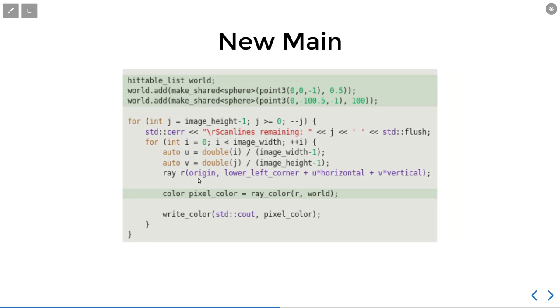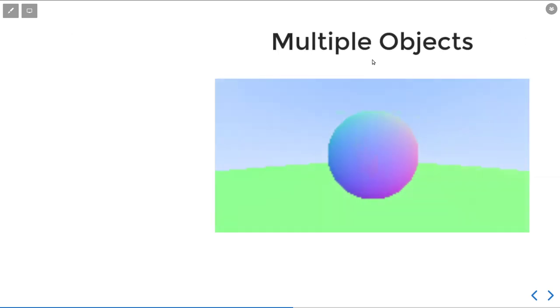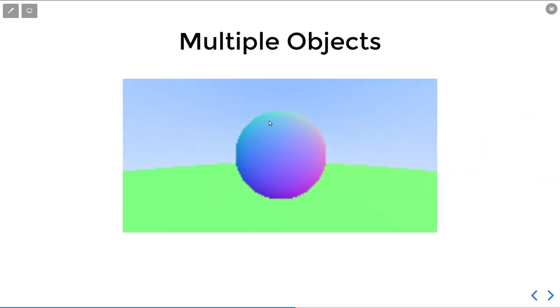And finally, we can use that hittable list to add multiple spheres. The first sphere is the same sphere at the center of the screen that we had before, and the second sphere is a very large sphere below us that we use as a ground. As a result, we will have one sphere at the center of the scene and another sphere as a ground.